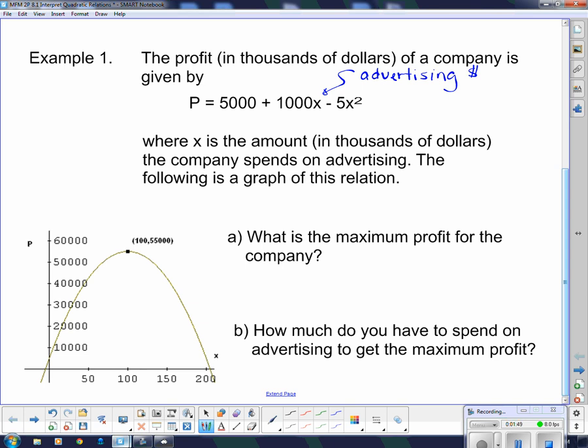So this says, what is the maximum profit for the company? Well, down here is our values of x, the advertising dollars. And over here is the function P, so it's profit. We want maximum profit. This is the maximum point. The maximum profit, I want the y line because the y tells me profit. So the maximum profit is right there. It's $55,000.